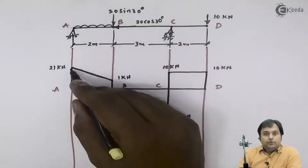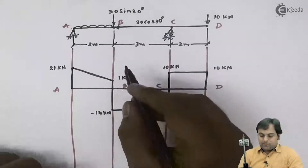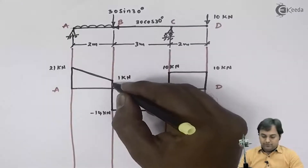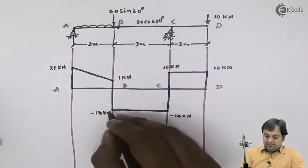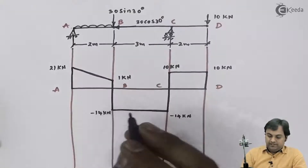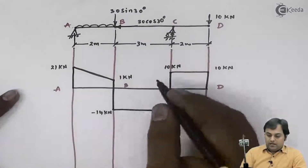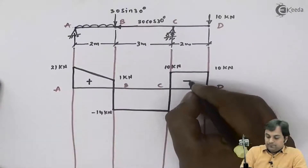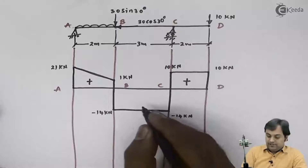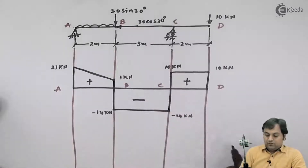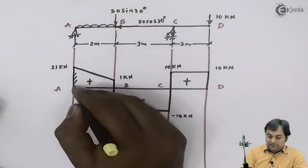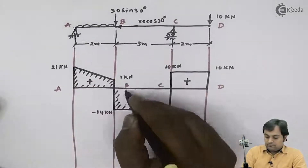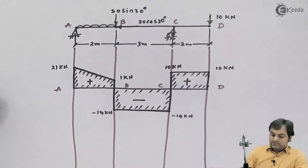The shear force at point A was 21 kN positive. At point B we had two values: the first is 1 kN positive and the second is minus 14 kN, a negative value. The values plotted above the line are positive and those below the line are negative. So here I have drawn the shear force diagram (SFD) for the given beam.